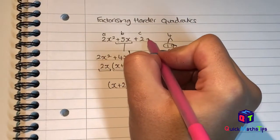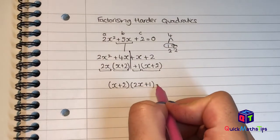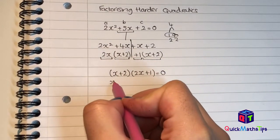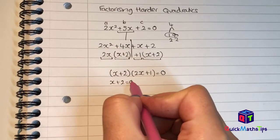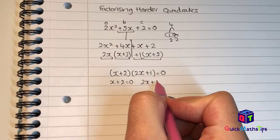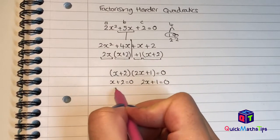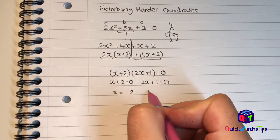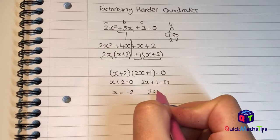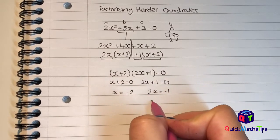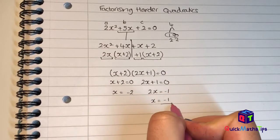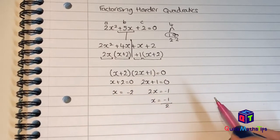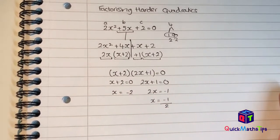If the question said solve it and this equation was equal to 0, we would set x + 2 = 0 and 2x + 1 = 0. Subtracting 2 from both sides gives x = −2. Subtracting 1 from both sides gives 2x = −1, and dividing by 2 gives x = −½. So x = −2 and x = −½.